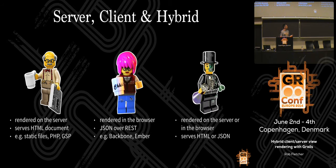Hybrid rendering is a mix of these two things. The idea is that you can use the same view templates on the server as you do on the client. So you've got a server capable of rendering a given URL as either an HTML page or as JSON, and in different circumstances it can do one or the other depending on which is appropriate.